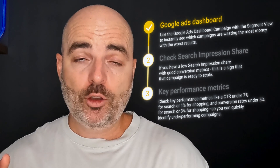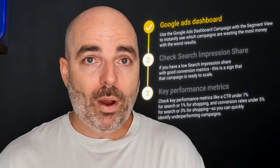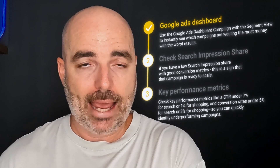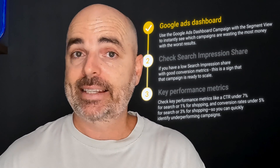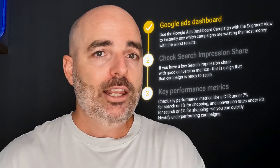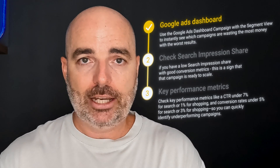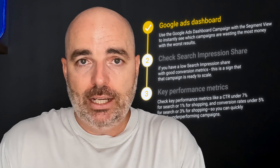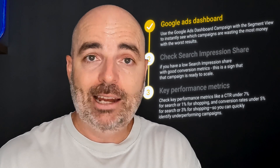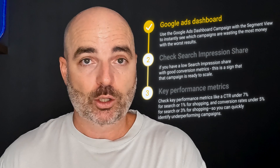Once we've looked at that overview, we then go into the different campaign view. When we look at campaigns, there are two core things we want to add in. We want to add the segment feature so we can segment by conversions, because we really want to match up and see at the campaign level what is performing well and where the conversion metrics are performing.